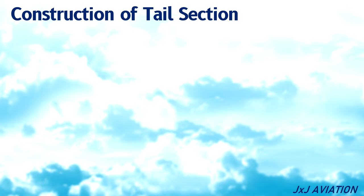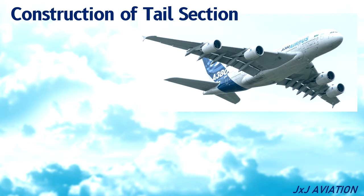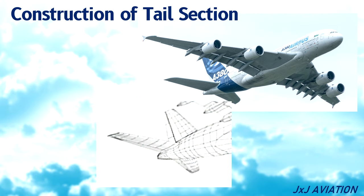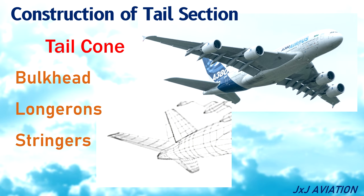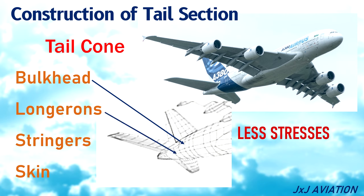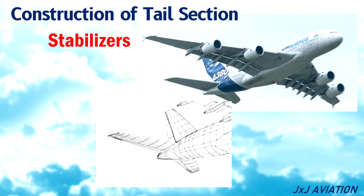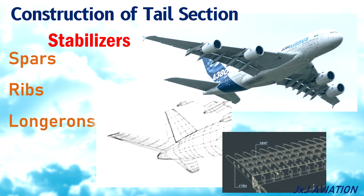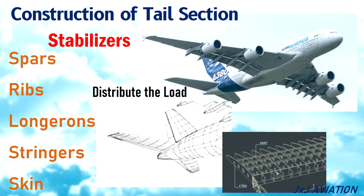Construction of the tail section. The structural members of the tail section, or the empennage, are the same as those of the fuselage and the wing. The construction of the tail cone is similar to the fuselage with bulkheads, longerons, stringers, and a metallic skin; however, lighter materials are used since less stresses are acting here. The horizontal and vertical stabilizers are similar in construction to the wing with spars, ribs, longerons, stringers, and skin. In the empennage, again, the basic principle is to distribute the load across different structural members and have a fail safe design.